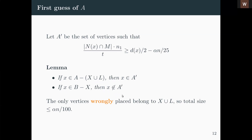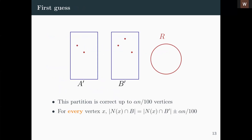So we do this sampling, which gives a good degree estimate, and from it we declare vertices into A' or B'. Vertices not correctly assigned — those in X ∪ L or wrongly placed between A' and B' — have total size at most alpha*n/100. This is our rough first guess: it makes some mistakes, but the set of incorrectly placed vertices is small.